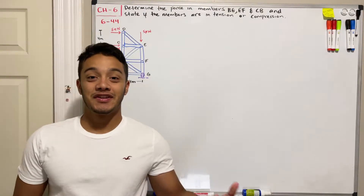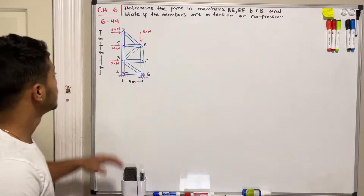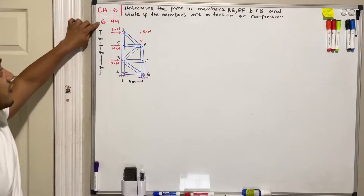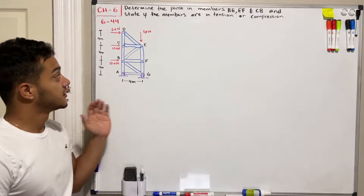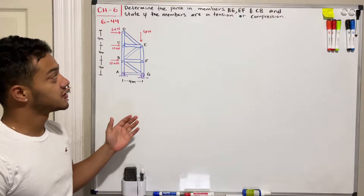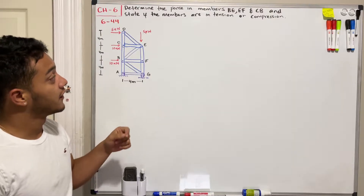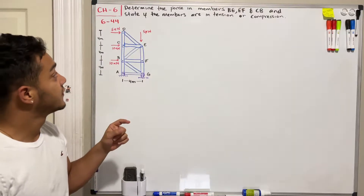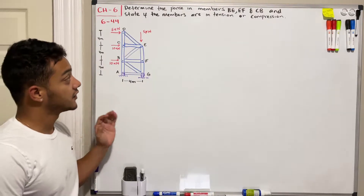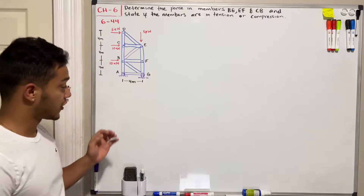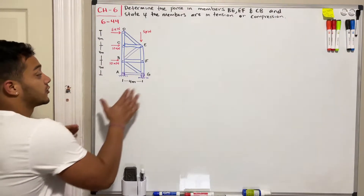Welcome back everyone to Learning with Teaching. We're in Statics and today we're going to do problem 6.44. It says determine the force in members BE, EF, and CV, and state if the members are in tension or compression. We have our truss member here.